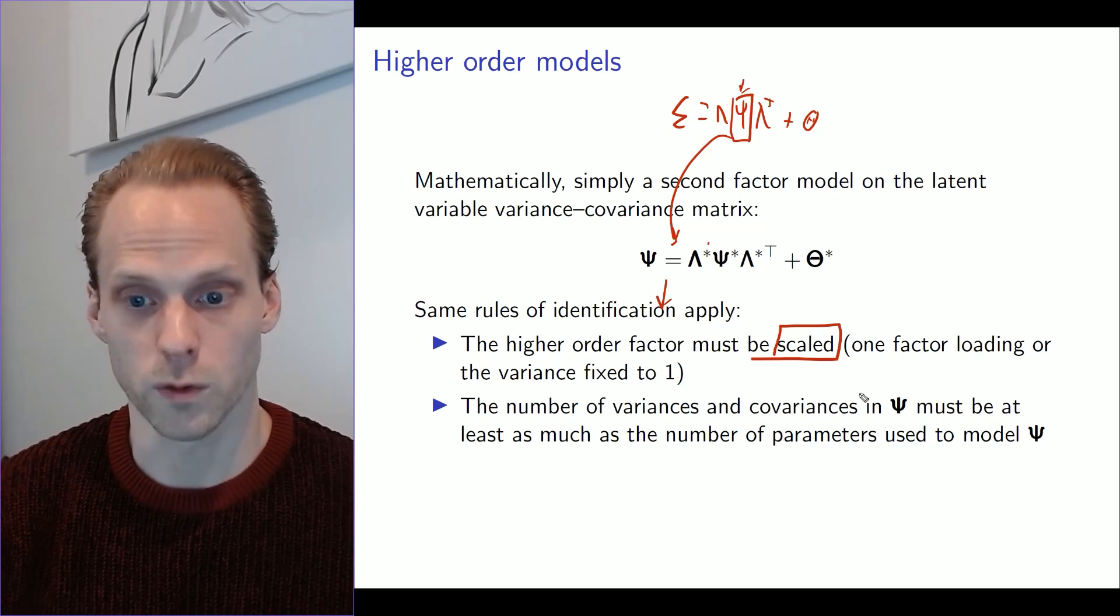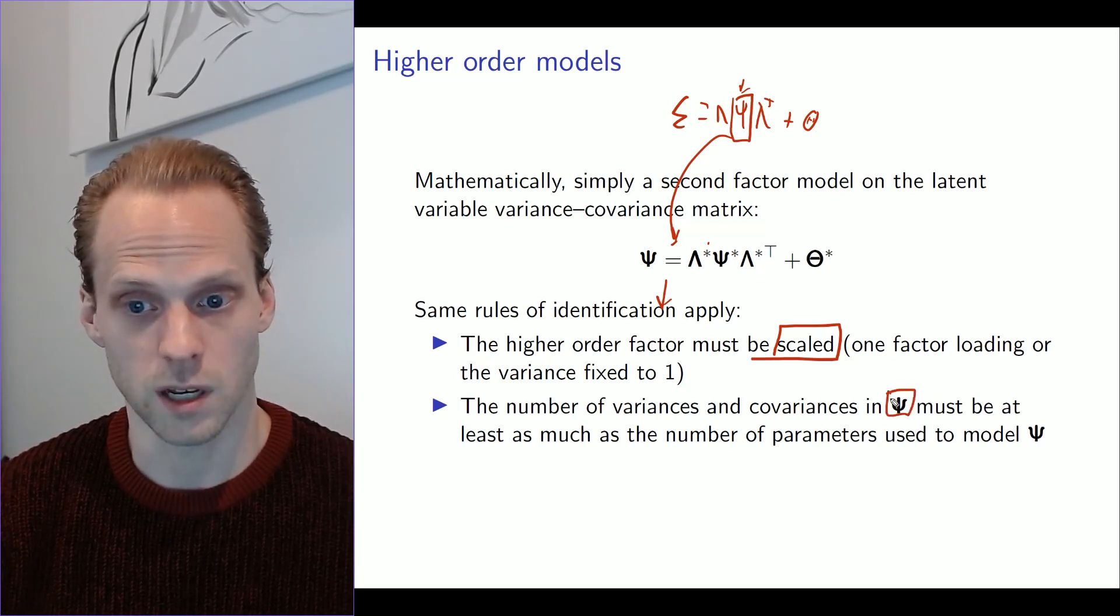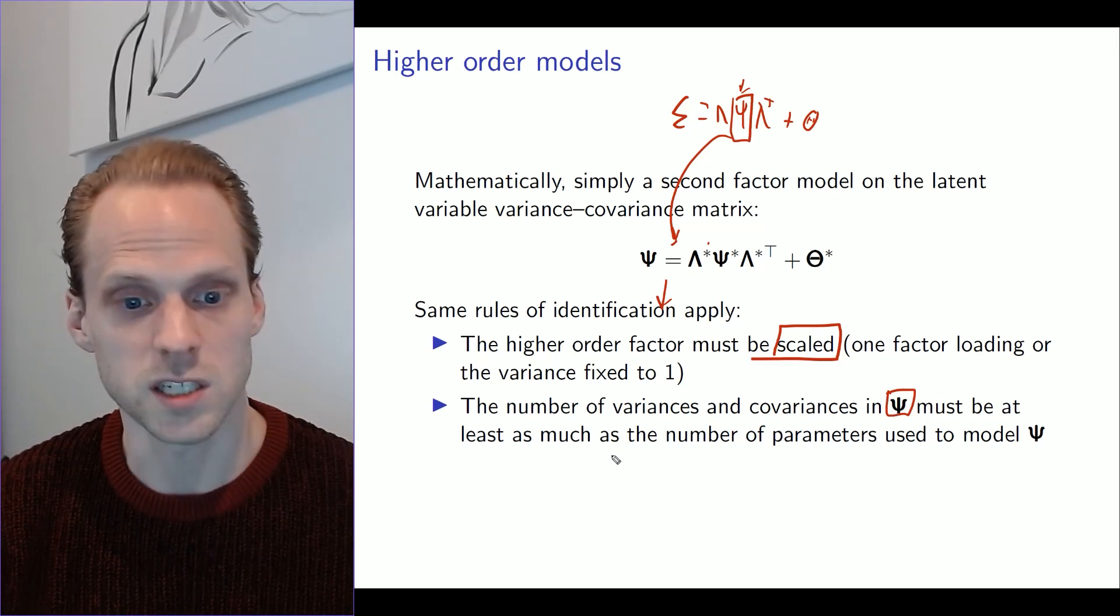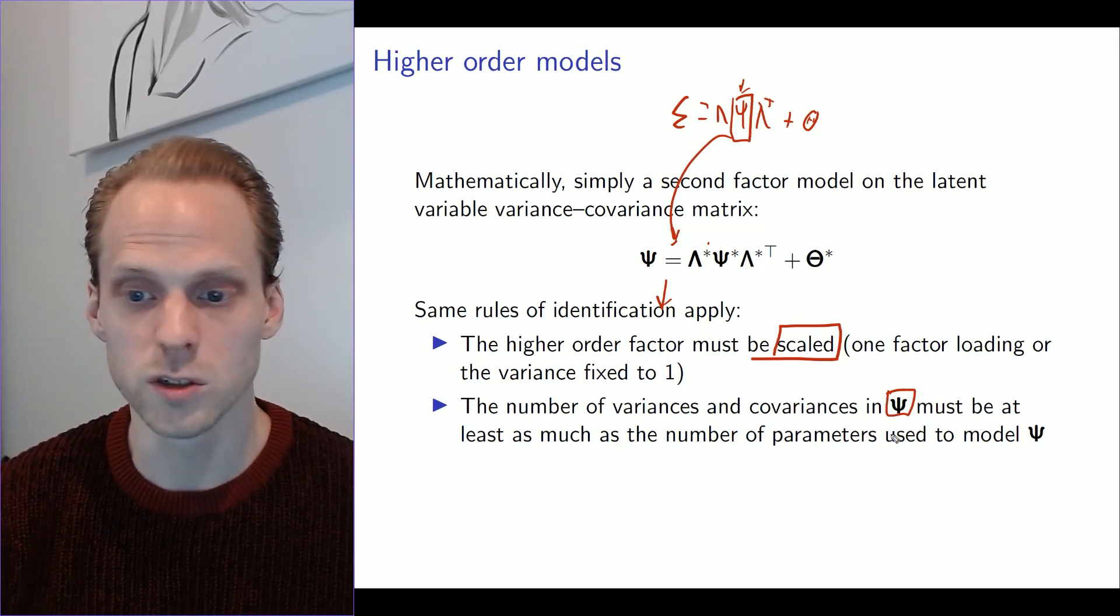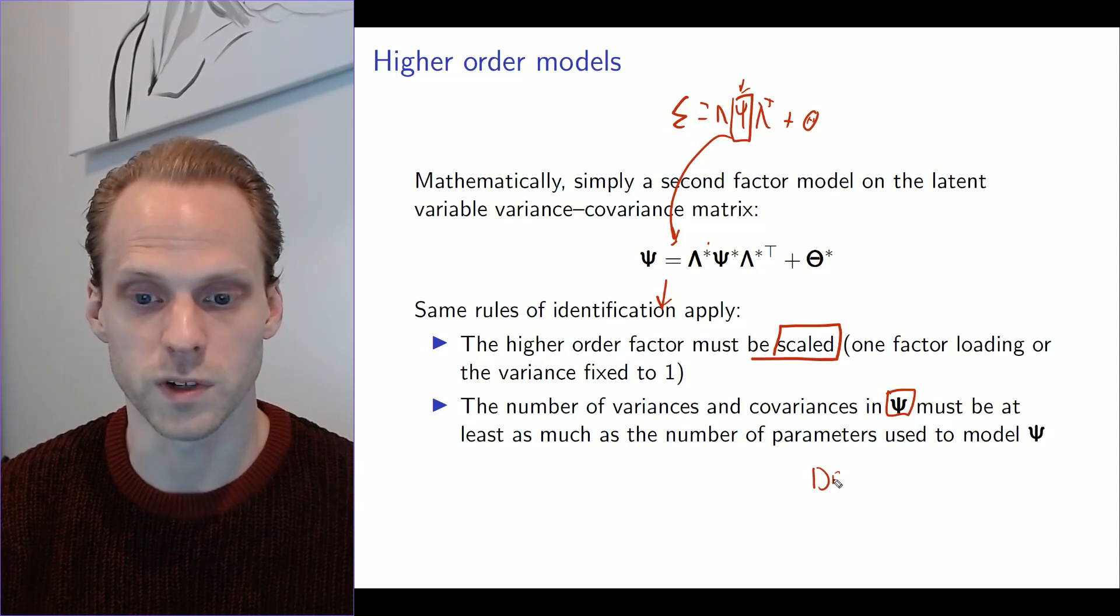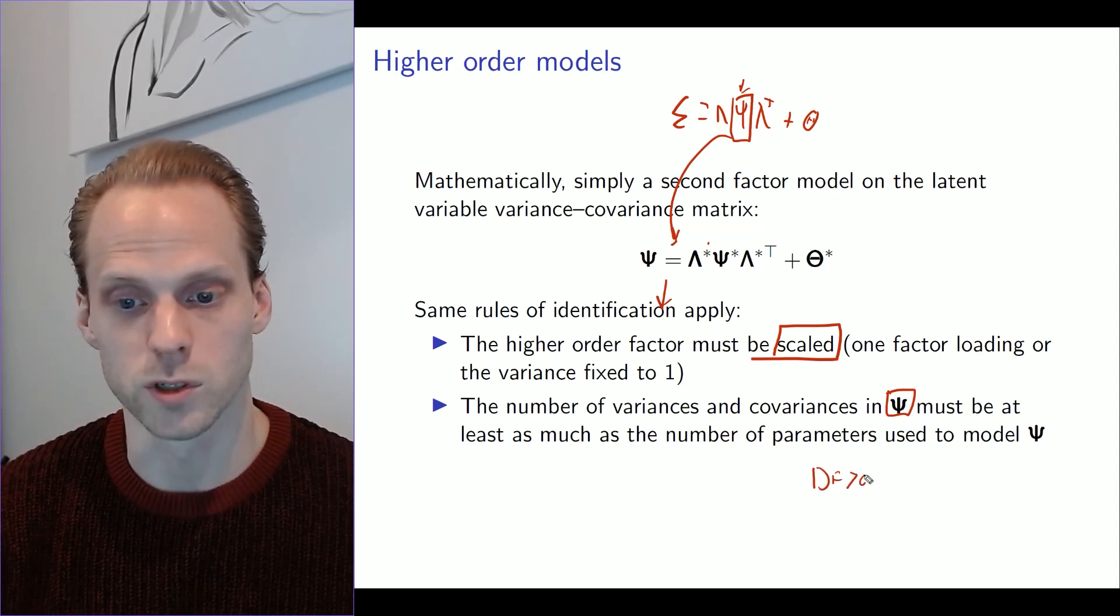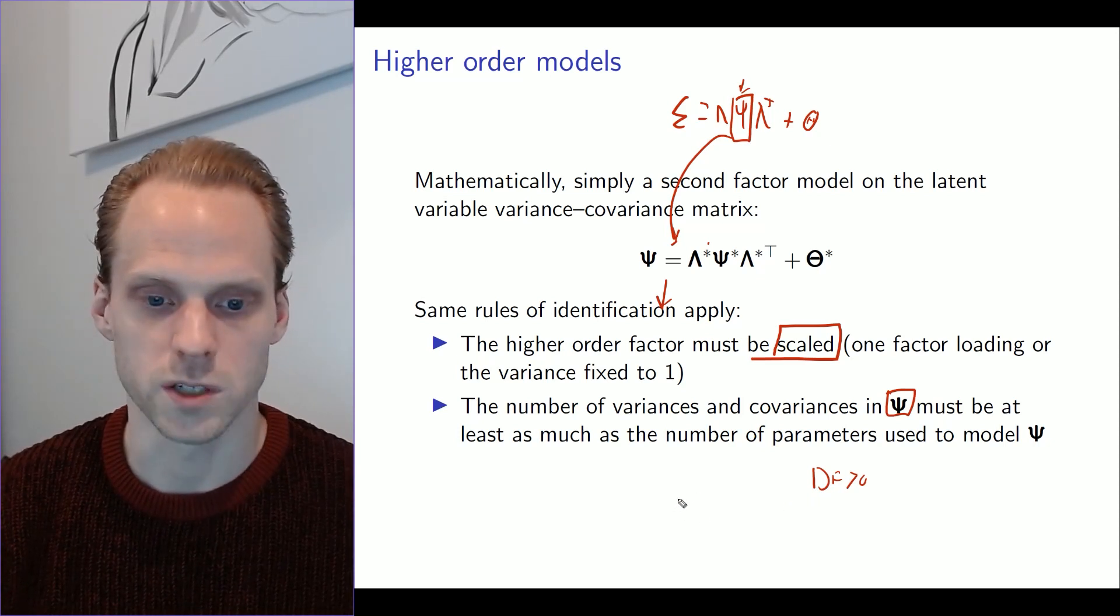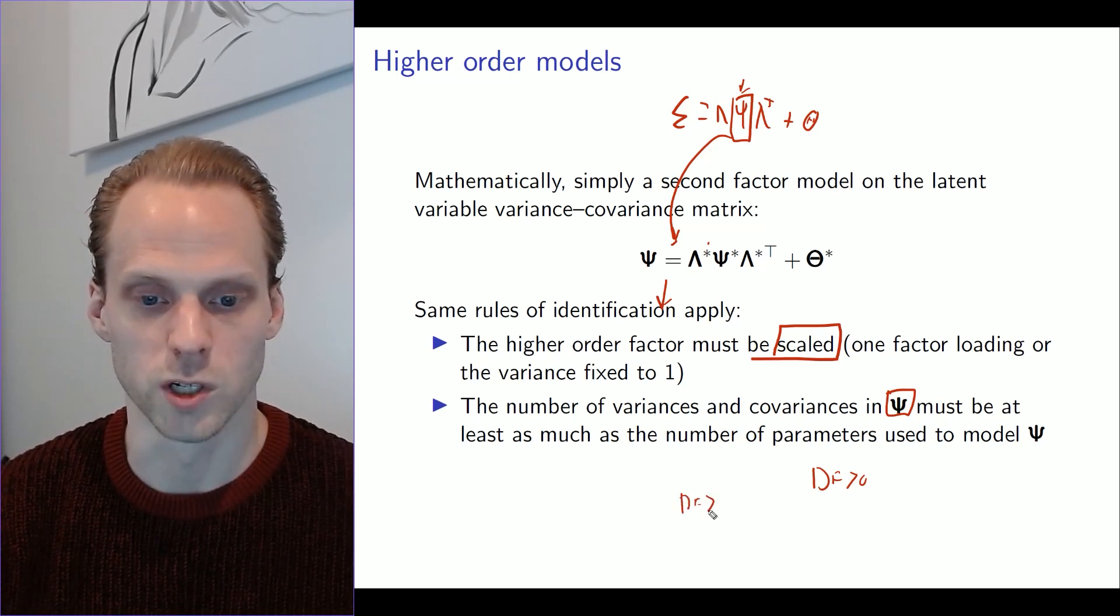And the number of variances and covariances in psi, the first latent variable variance-covariance matrix, must be at least as much as the number of parameters used to model psi, or the degrees of freedom at the latent level must also be above zero. And the total degrees of freedom, so including everything, must also be above zero.